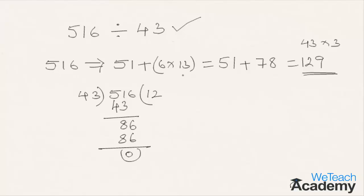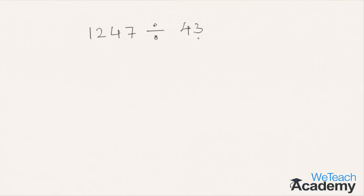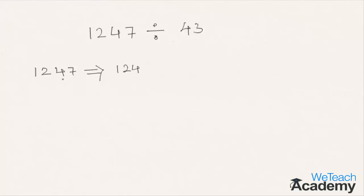The concept of adding 13 times the last digit to the remaining number, where if the result is divisible by 43 then the original number is also divisible by 43, is confirmed. Moving to the next example, which is 1247: according to the concept, 124 plus 7 times 13 gives us 124 plus 91, which equals 215.